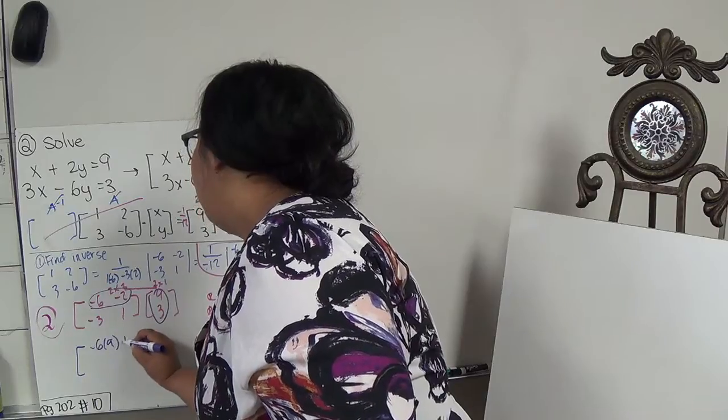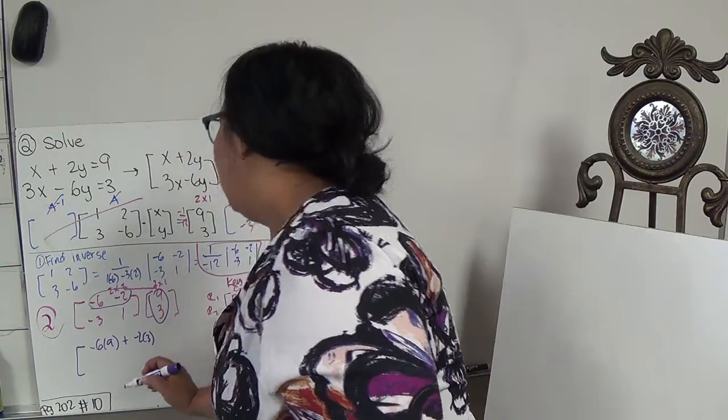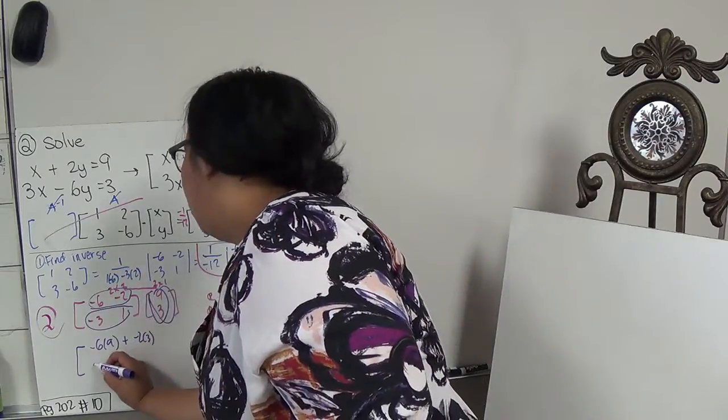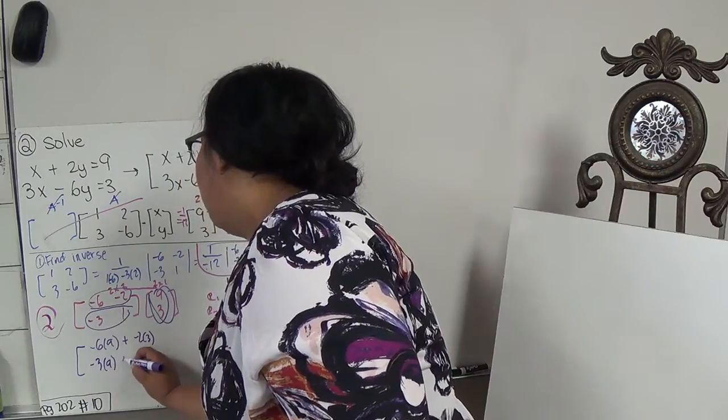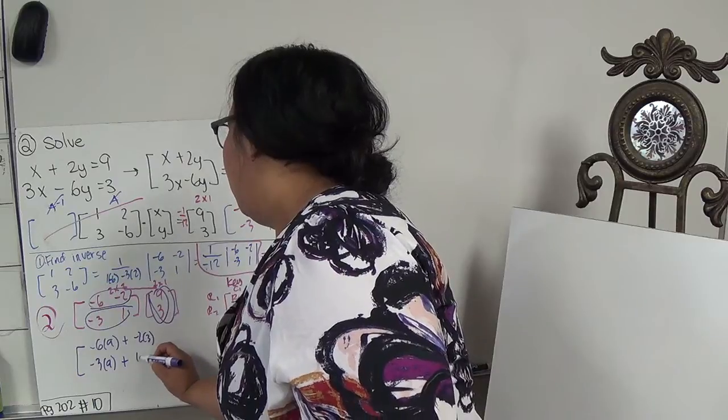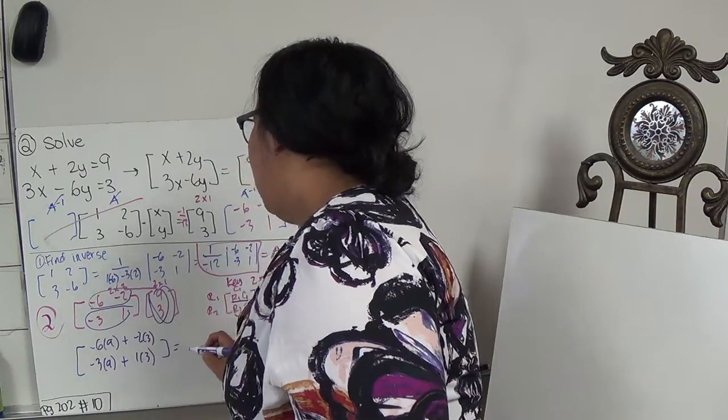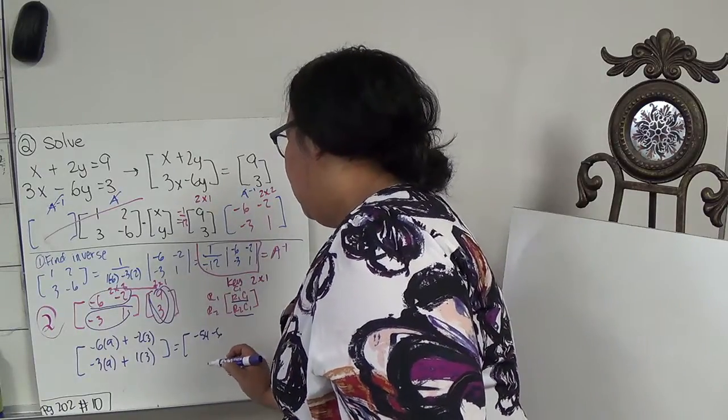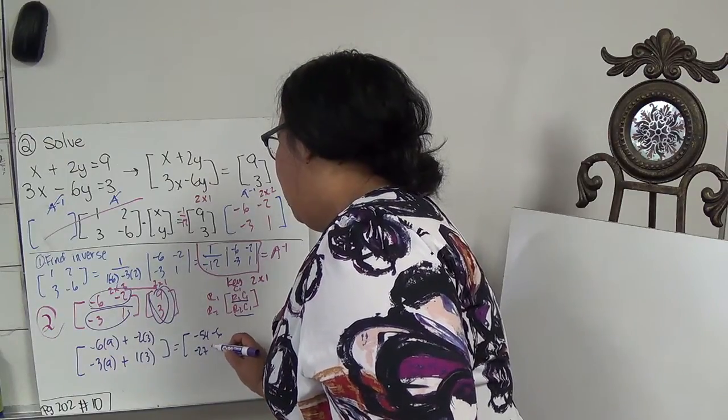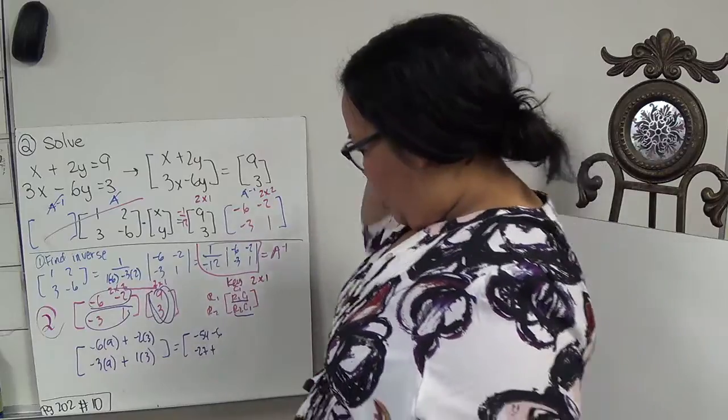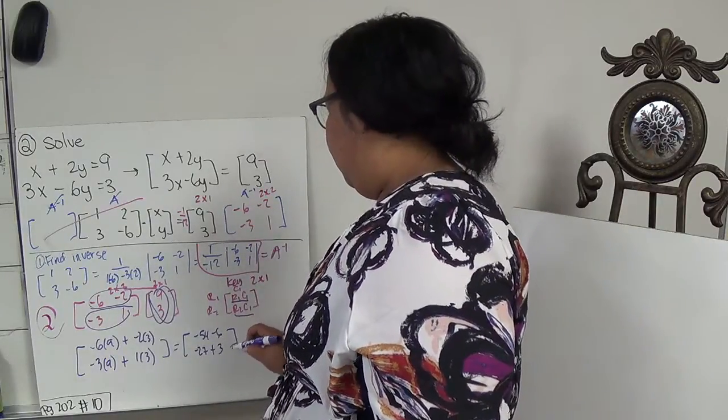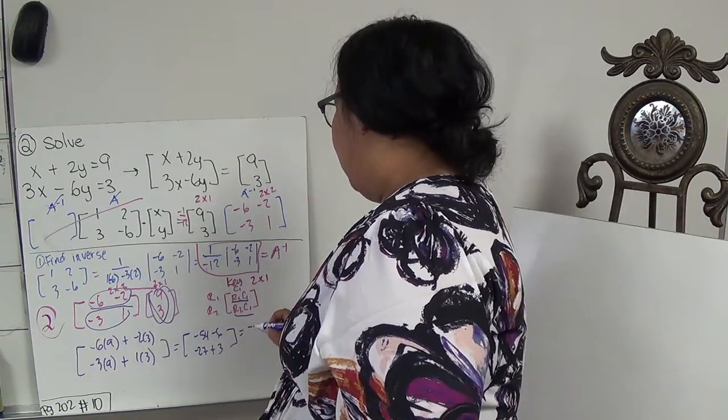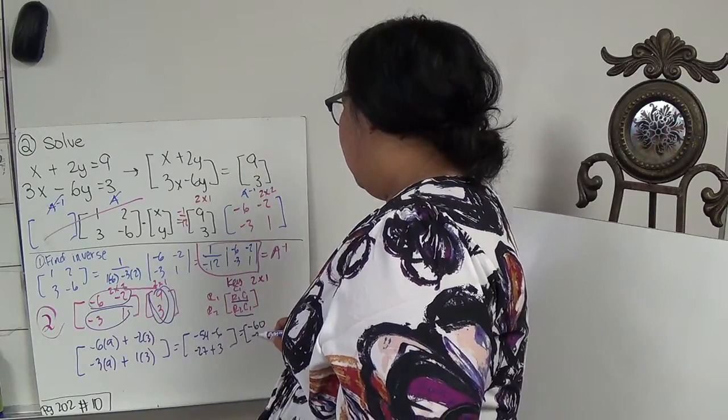So, my first one is row 1, column 1. Negative 6 times 9 plus negative 2 times 3. And then, the next one is row 2, column 1. Negative 3 times 9 plus 1 times 3. So, then, we end up with negative 54 minus 6, and then negative 27 plus 3. So, then, I end up with negative 60 and negative 24.